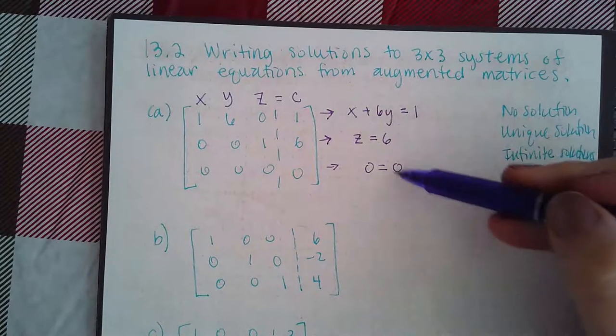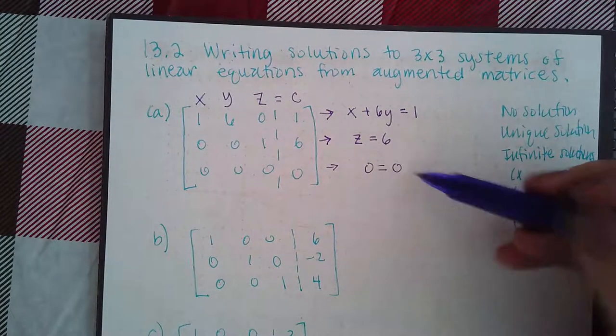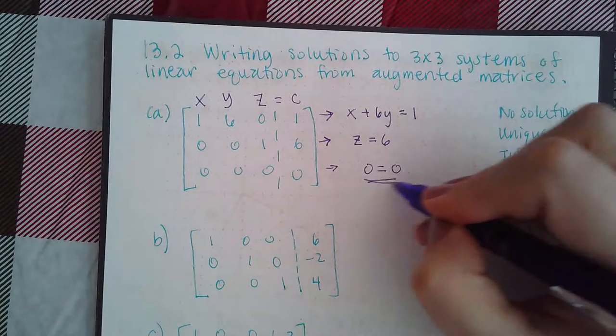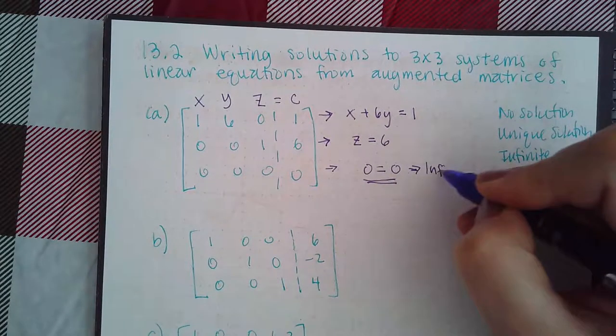When this happens, when you have 0 = 0, this automatically means you have infinitely many solutions.